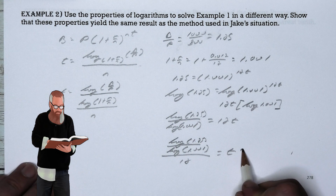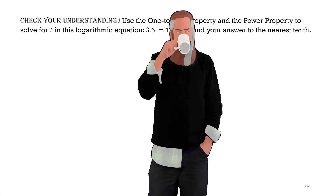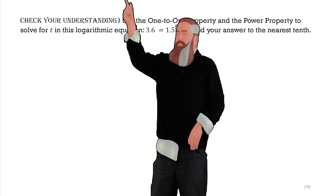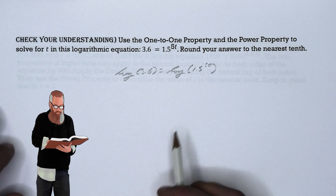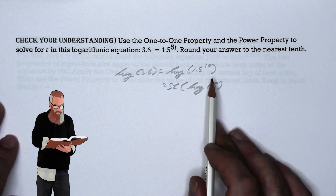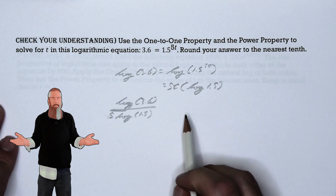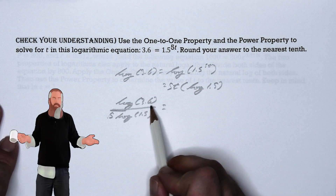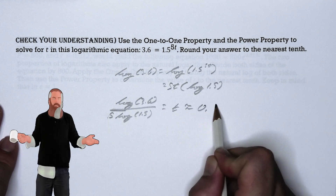Dividing both sides by 12, we confirm that t is approximately 18.6 years. Let's check our understanding: use the one-to-one property and the power property to solve for t in 3.6 equals 1.5 to the 5t power, and round to the nearest tenth. We rewrite this as a log, use the power property to get 5t equals log of 1.5, then divide both sides by 5 log of 1.5, giving us log of 3.6 divided by 5 log of 1.5 equals t, which is approximately 0.6.